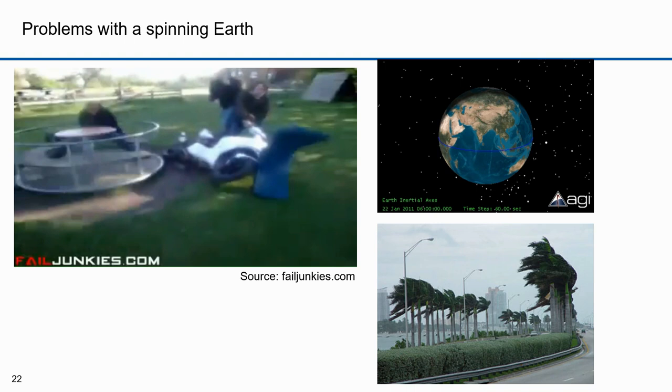We don't fly off a spinning earth because of a combination of momentum and gravity. If the earth spun faster, we'd likely fly off, but it would have to be very fast.